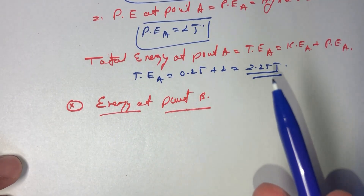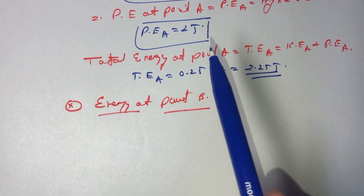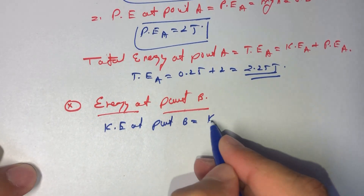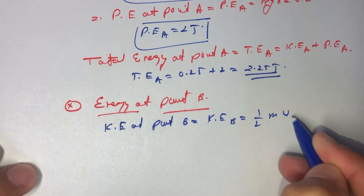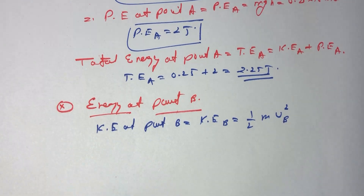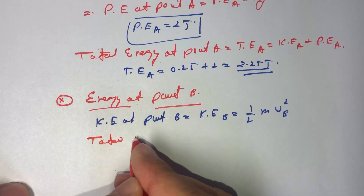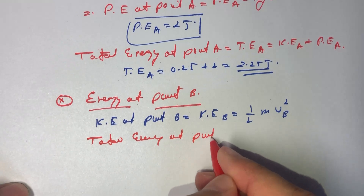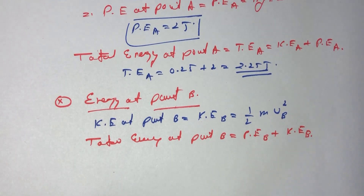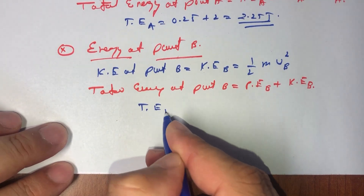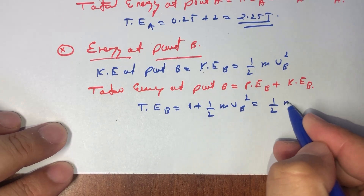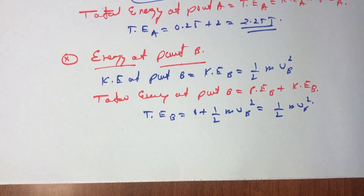At point B, the only energy present is kinetic energy because the height of point B is zero, so potential energy at B is zero. Kinetic energy at B equals half m v_b squared, where v_b is the velocity at point B. Therefore, total energy at B equals potential energy at B plus kinetic energy at B, which equals 0 plus half m v_b squared.